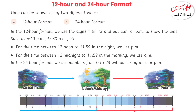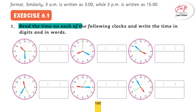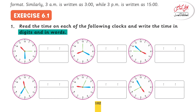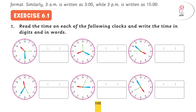Now we start Exercise 6.1. Question number 1: Read the time on each of the following clocks and write the time in digits and in words. For the first clock, the red (hour) needle is at 10, so we take 10. Then the minute needle is at 6, so we multiply 6 by 5 to get 30. The second needle is at 3, so we multiply 3 by 5 to get 15. The time is 10 hours, 30 minutes, and 15 seconds.